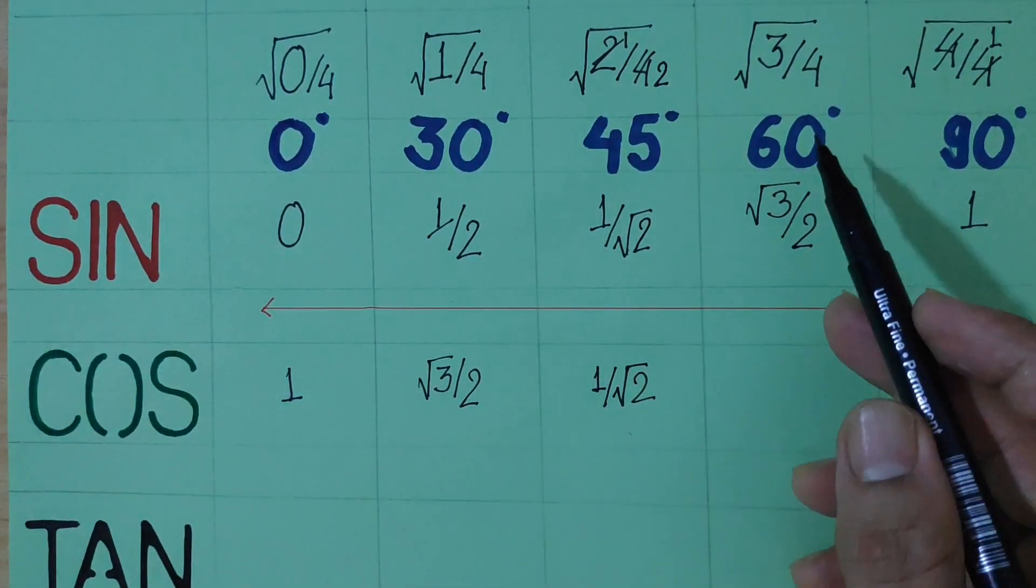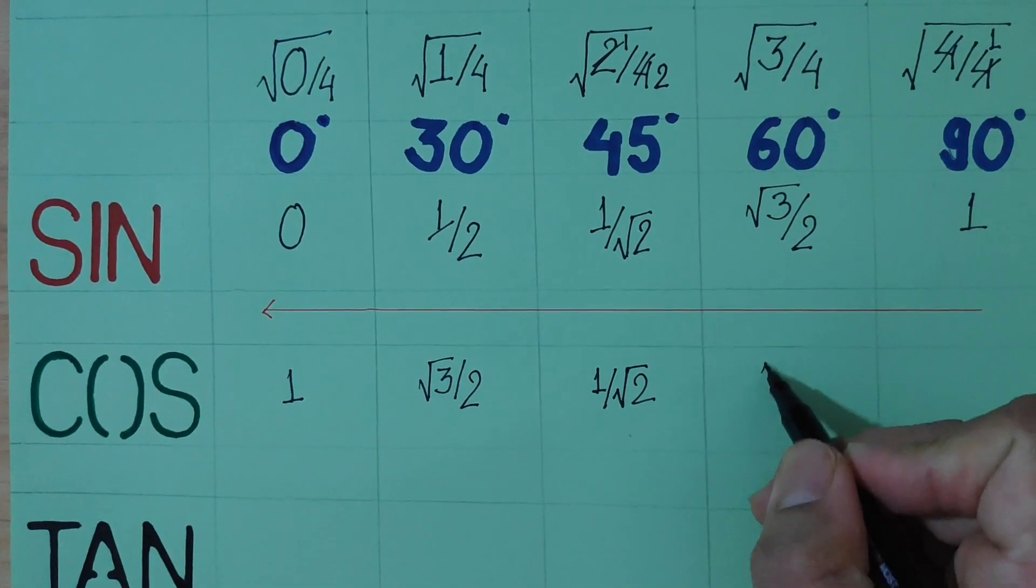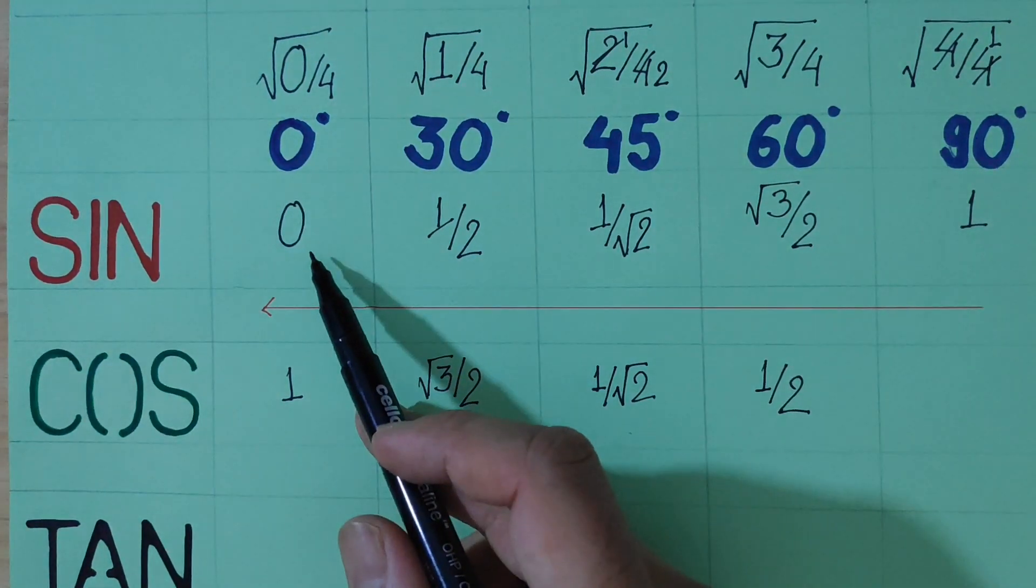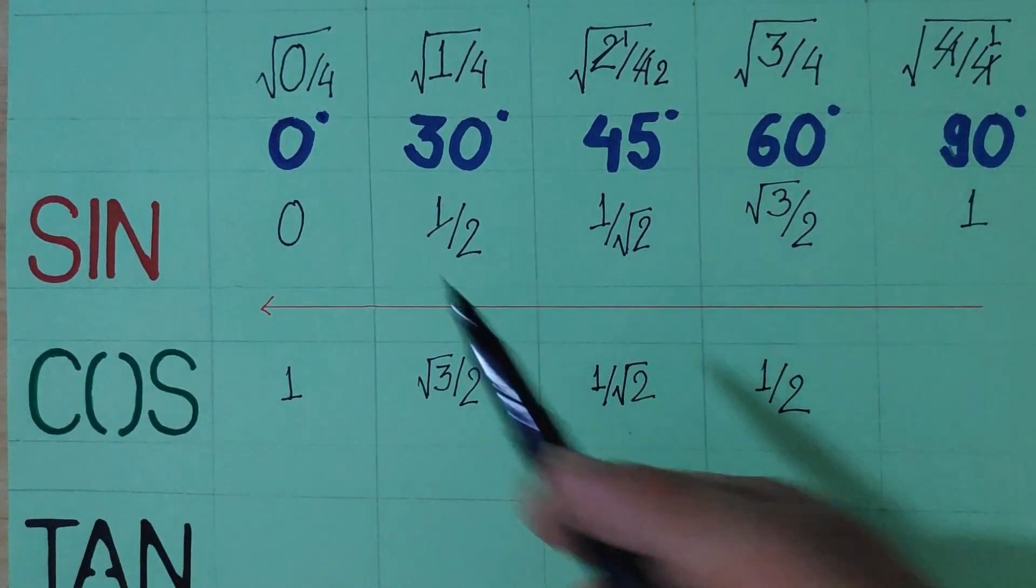Cos 60 is 1 by 2, and finally sin 0 is 0, cos 90 is 0.